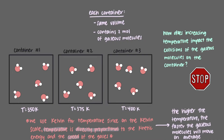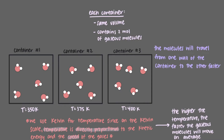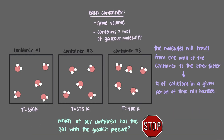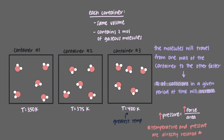How does increasing temperature impact the collisions of the gaseous molecules on the container? With an increased temperature, the gaseous molecules will move faster. This means that they'll travel from one wall of the container to the other faster, and the number of collisions in a given period of time will increase. The force exerted by the gaseous molecules on the walls of the container increases, which means the pressure of the gas also increases. In other words, temperature and pressure are directly related, assuming that volume and the amount of gas stay the same. So the gas in the container with the greatest temperature, container 3, will have the greatest pressure.